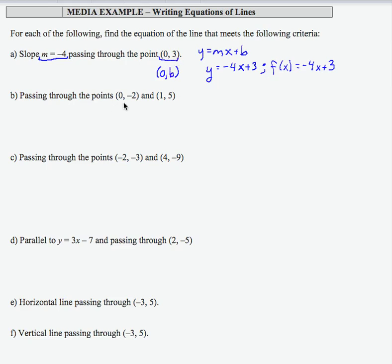For part b, I'm given two ordered pairs. So what I don't know here that I did know in part a is the slope, which means I need to find my slope using the ordered pairs that I am given.